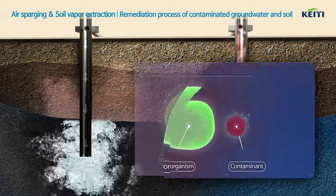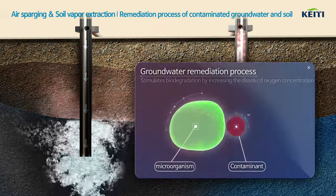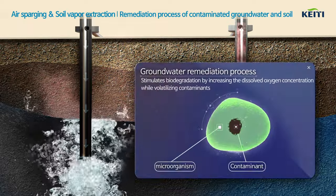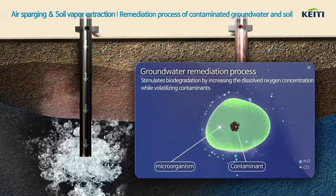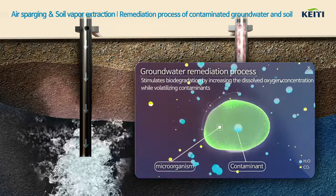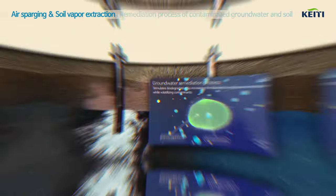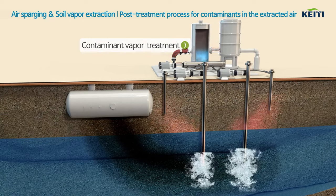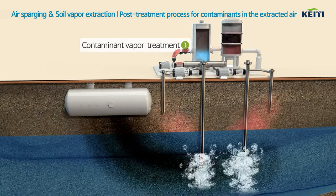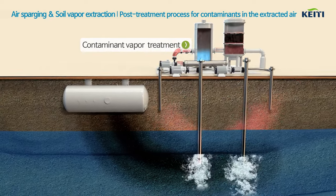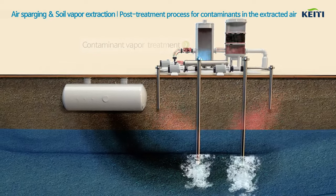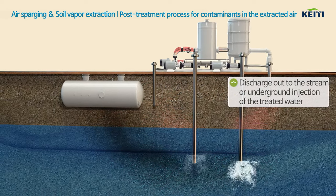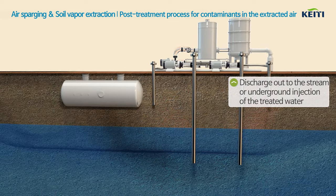This process increases the dissolved oxygen concentration and stimulates microbial activity to break down more contaminants. The volatilized contaminants are extracted to the ground through the air extraction wells. The groundwater purified by the treatment system is then discharged out to a stream or re-injected into the subsurface.